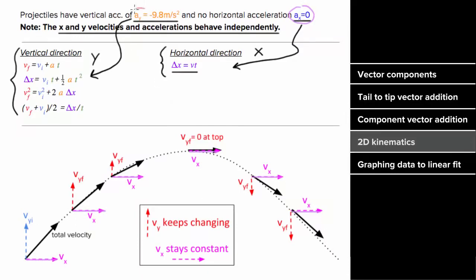But since there is acceleration in the vertical direction, the vertical component of the velocity will get smaller and smaller until it reaches the top, and that means the total speed of the projectile decreases as you approach the top. At the top, there is zero vertical component of velocity, since the projectile is not moving up or down at that moment. And then on the way down, the vertical component of the velocity gets more and more negative, which increases the speed of the projectile. Keep in mind, during this entire trip the vertical acceleration is the same — negative 9.8 — on the way up, at the top, and on the way down; the vertical acceleration never changes.